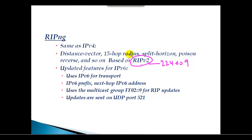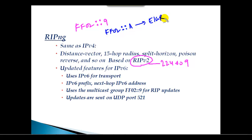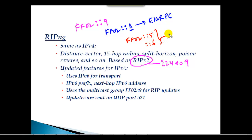Just like RIPv2 uses 224.0.0.9 as its multicast address for IPv4, RIPng uses FF02::9. EIGRP uses FF02::A because it uses 224.0.0.10, where 10 represents A in hexadecimal. OSPF uses FF02::5 and FF02::6 — these are the multicast addresses used by OSPFv3 for IPv6.